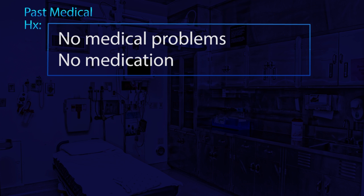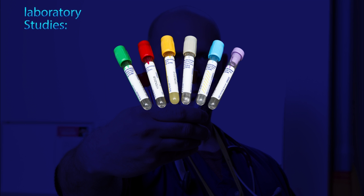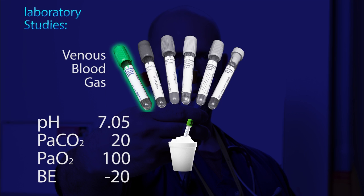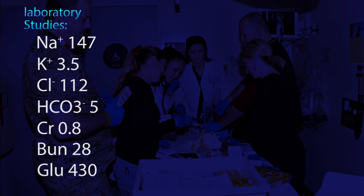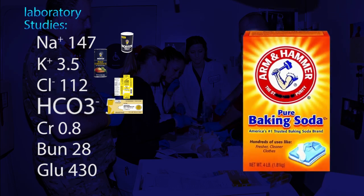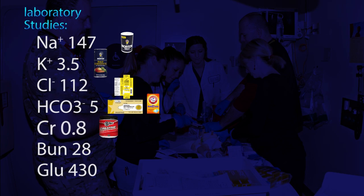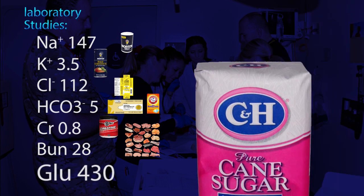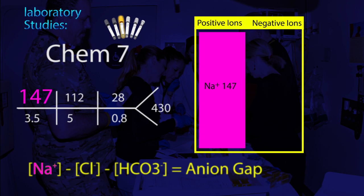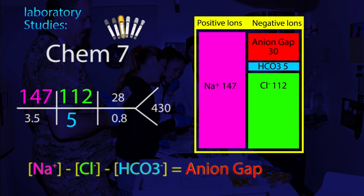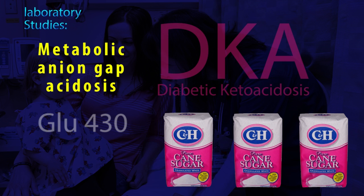Past medical history shows no medical problems and no medications. We get labs: CHEM7, a blood gas (BBG is less traumatic so that's ideal), and urine. The labs show a sodium of 147, potassium 3.5, chloride 112, bicarb of 5, creatinine normal, BUN elevated at 28, glucose of 430, and an anion gap of 30. He has an anion gap metabolic acidosis, and in this case it looks like DKA.